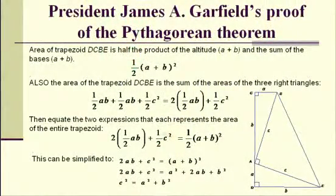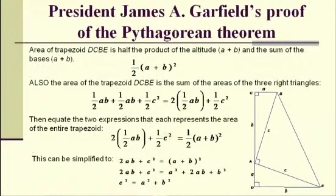What we're going to do — and this is what Garfield did — is represent the area of the trapezoid in two different ways. The traditional way is that the trapezoid area equals one-half the height times the sum of the bases. The height in this case is A plus B, and the sum of the bases is also A plus B, so we have one-half times (A plus B) squared.